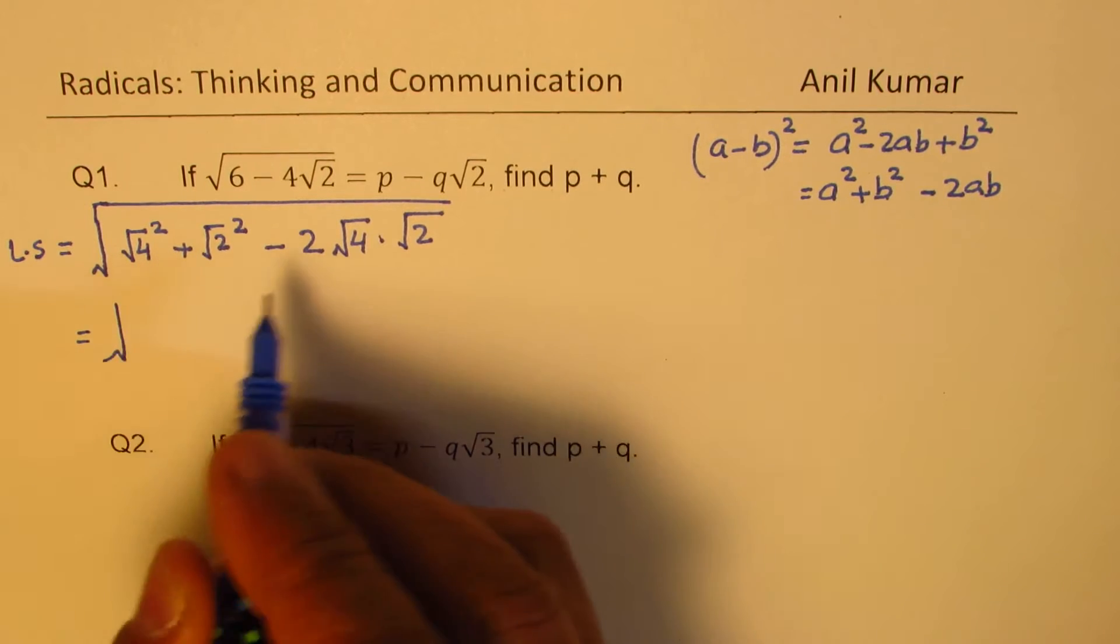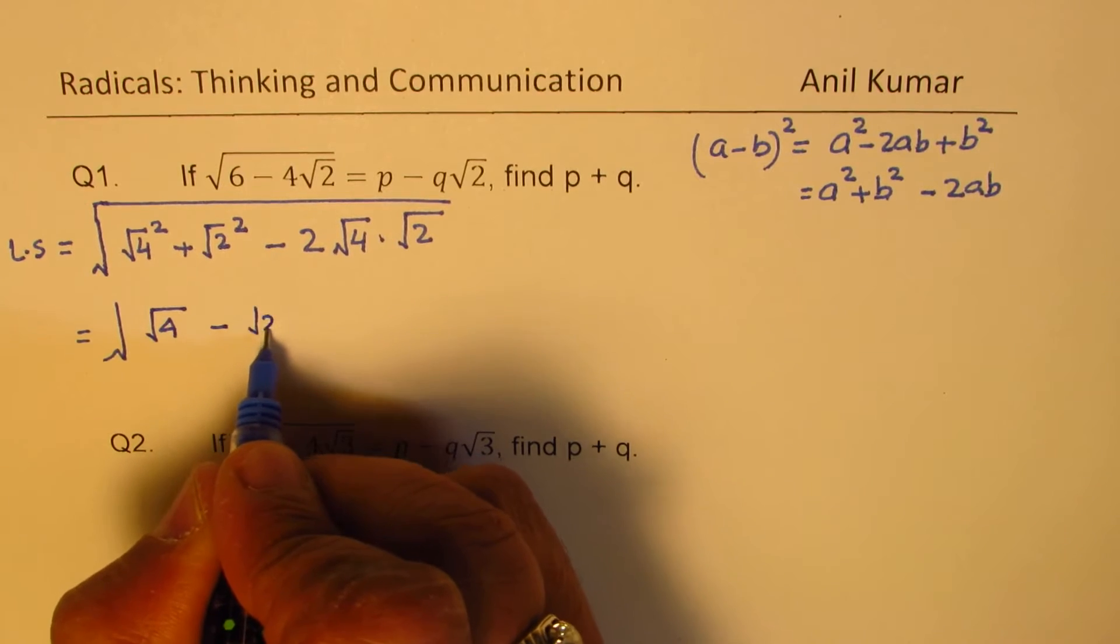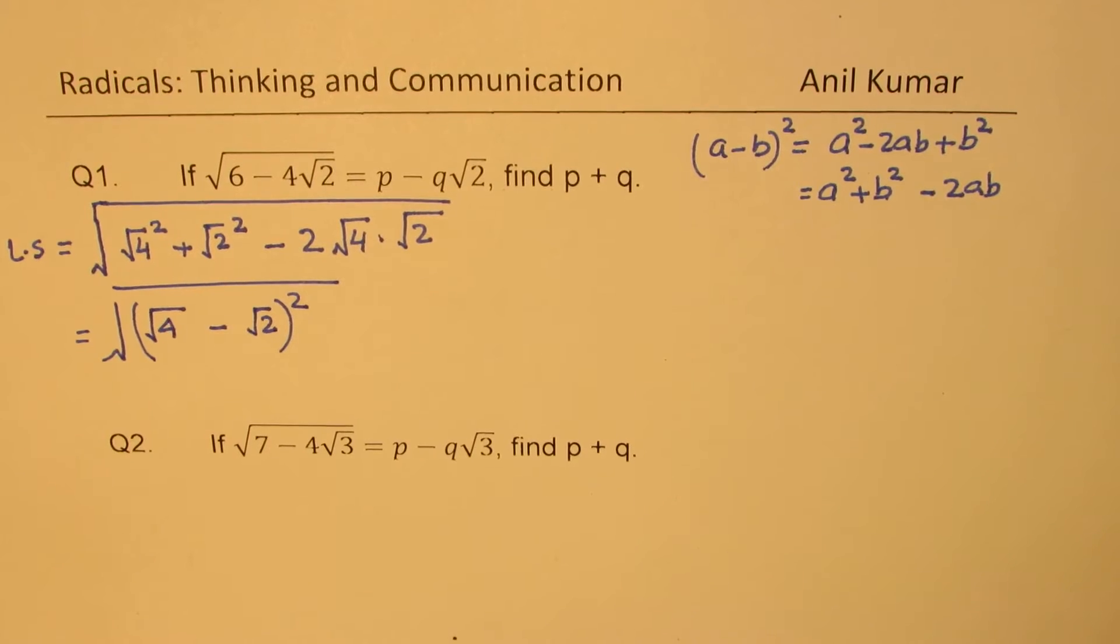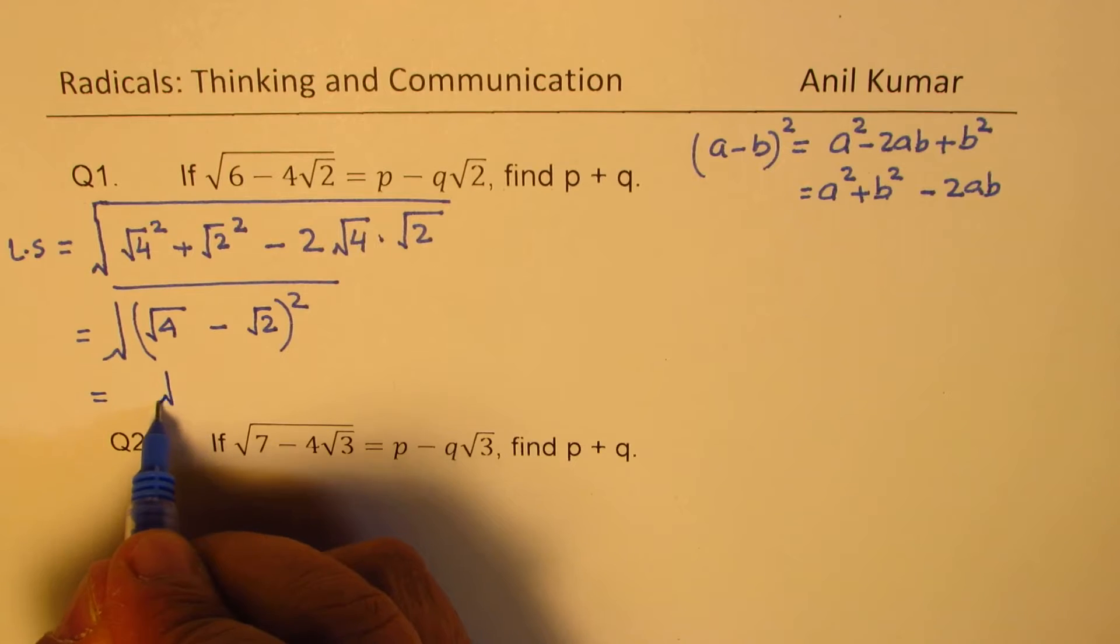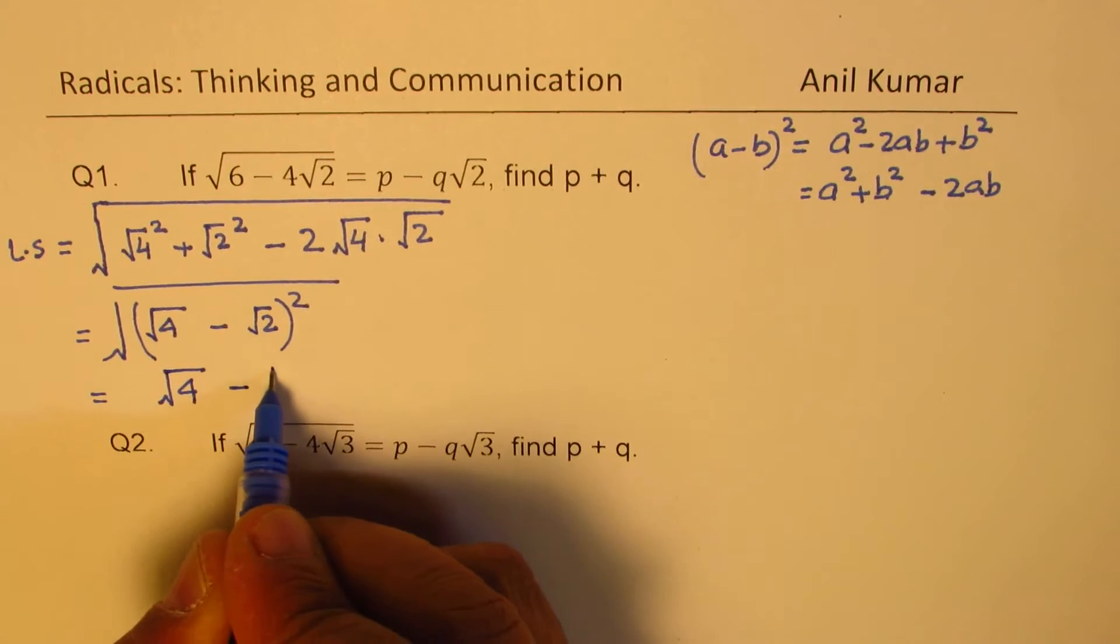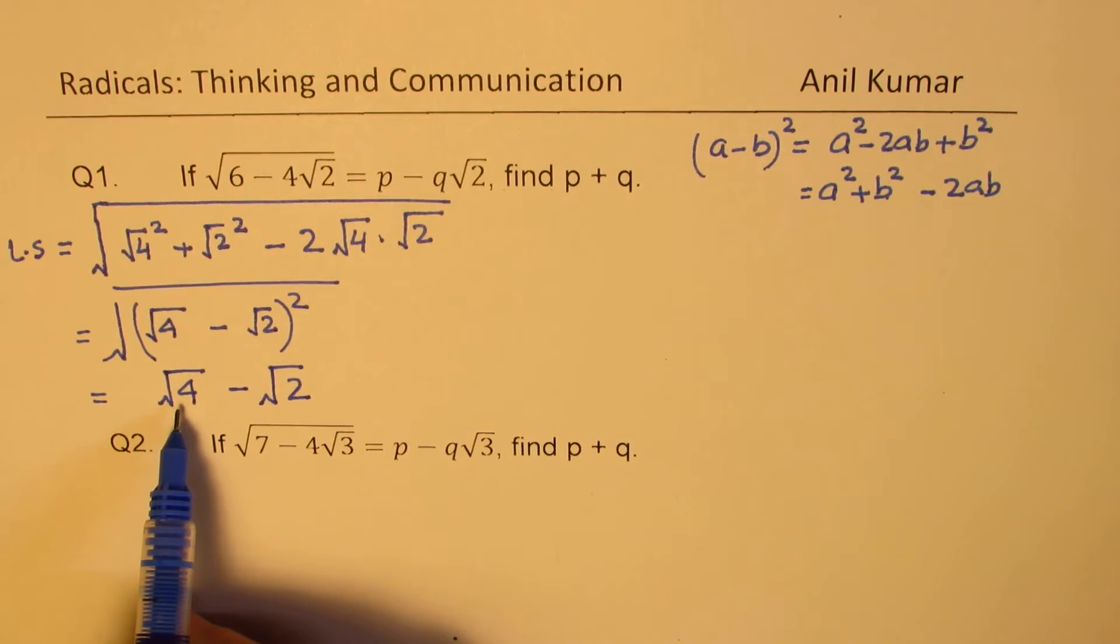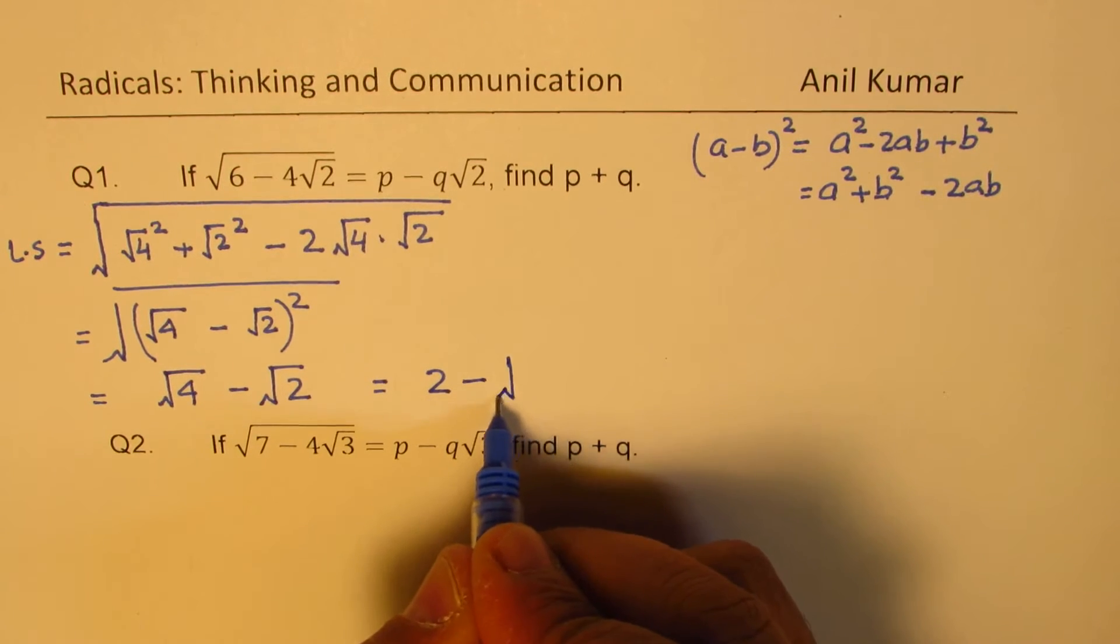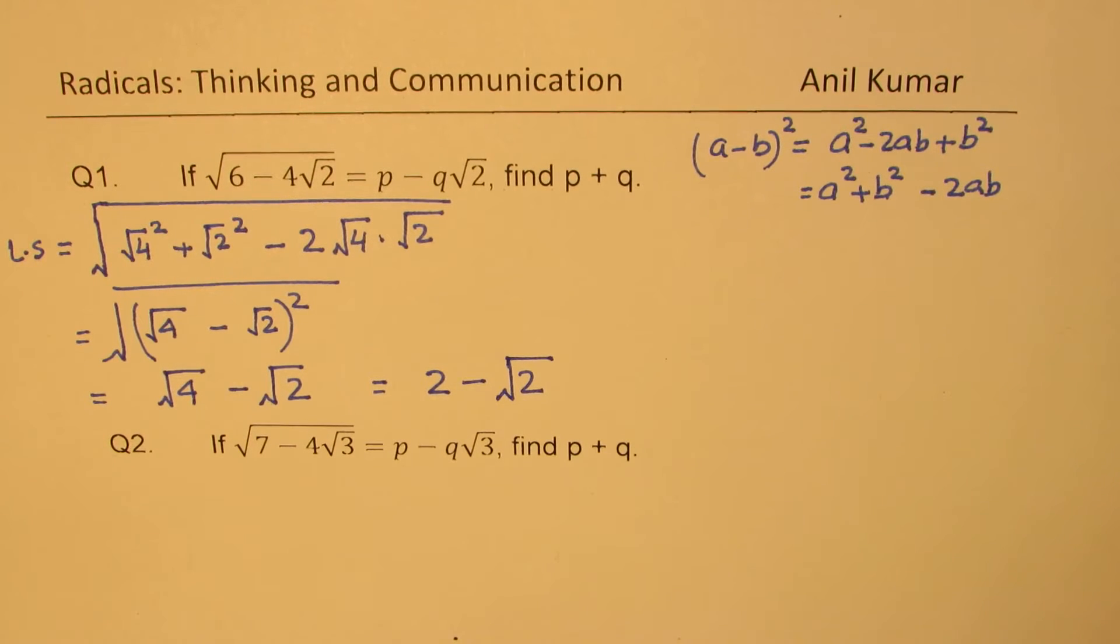We could actually now write this as square root 4 minus square root 2 whole square. Correct? Now square and square root, we could write this as square root of 4 minus square root 2. Square root 4 is basically 2. So which is equal to 2 minus square root 2. Does it make sense? So that is how we could write this.